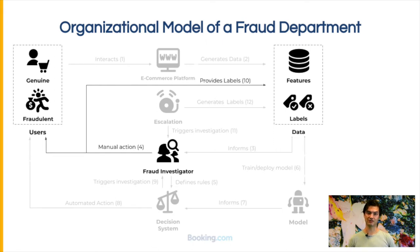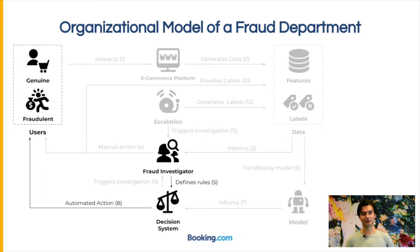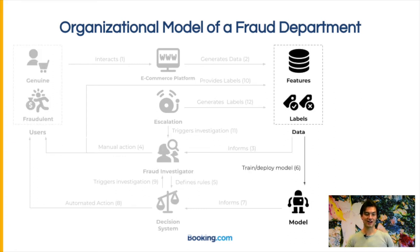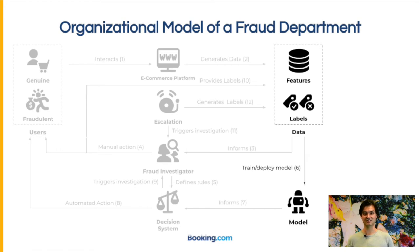The fraud investigators do more than just manual investigations. They also try to identify patterns among the different frauds they see, and use this to formulate rules. These rules can then be used to automatically detect a new type of fraud. In the bottom right you see the work product of the machine learning scientist: the machine learning model which is trained from the features and the labels, and tries to predict what is fraudulent and what is not. This can be an anomaly detection model, a supervised model, or in the broadest sense just some kind of model.